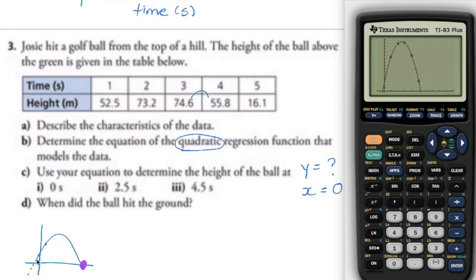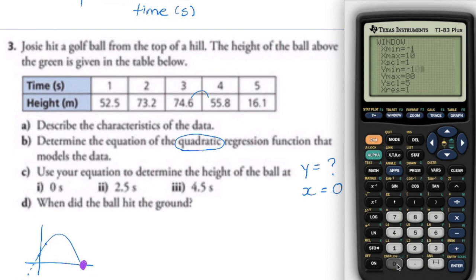Do the remaining ones in a similar fashion. For part D — when did the ball hit the ground? Go back to your sketch. There's a negative time intercept, which is extraneous, so we want the positive x-intercept. I'll adjust the window, moving the Y minimum down so the x-intercept isn't crunched at the bottom of the screen, and then take a look at the graph.